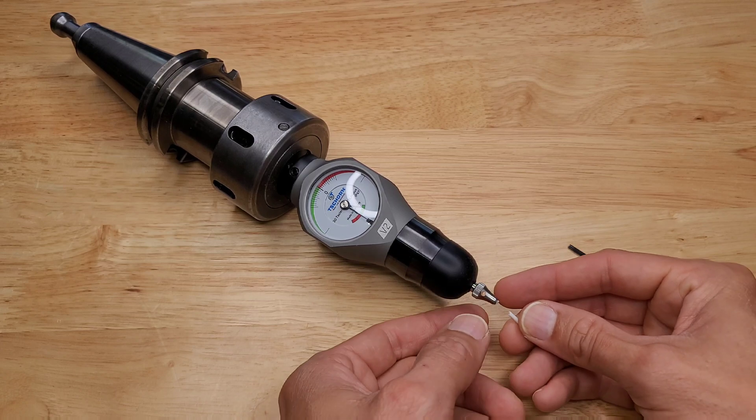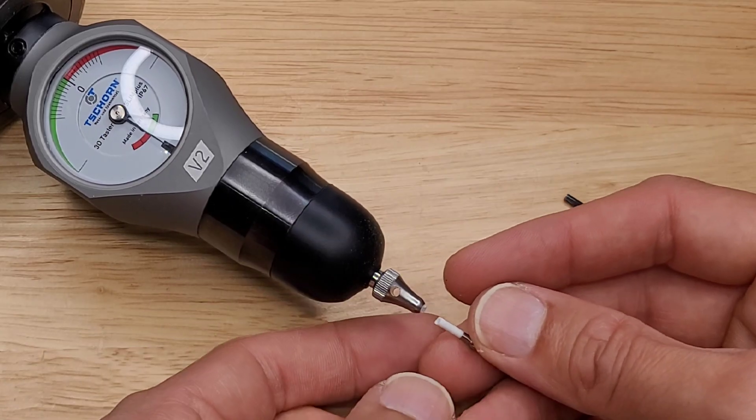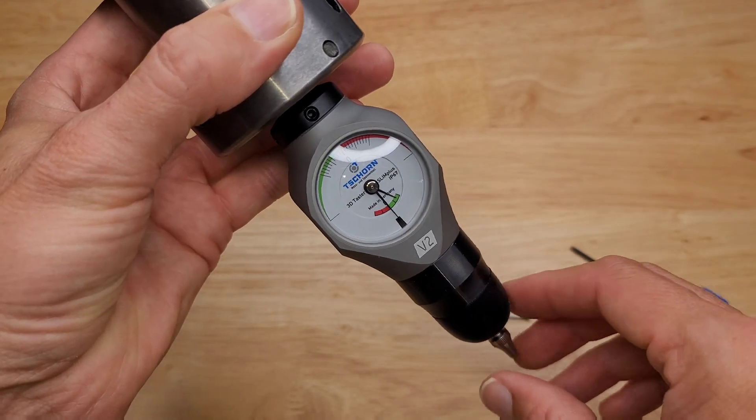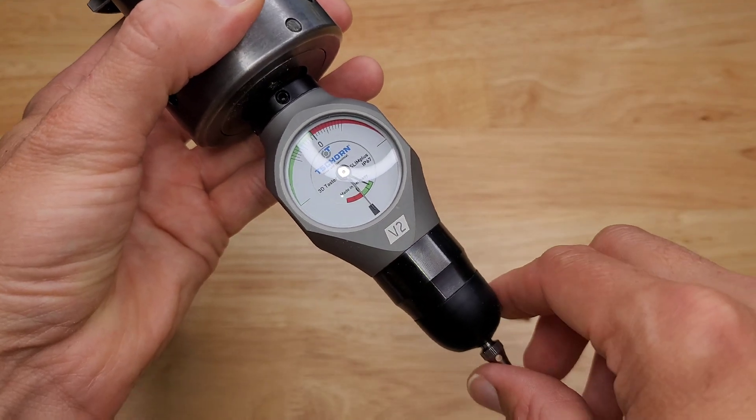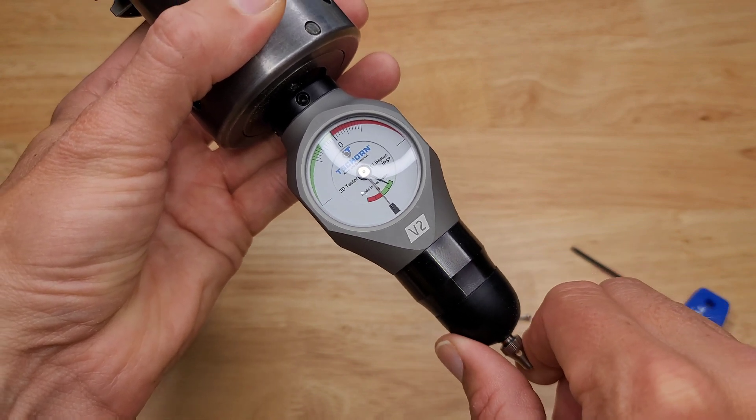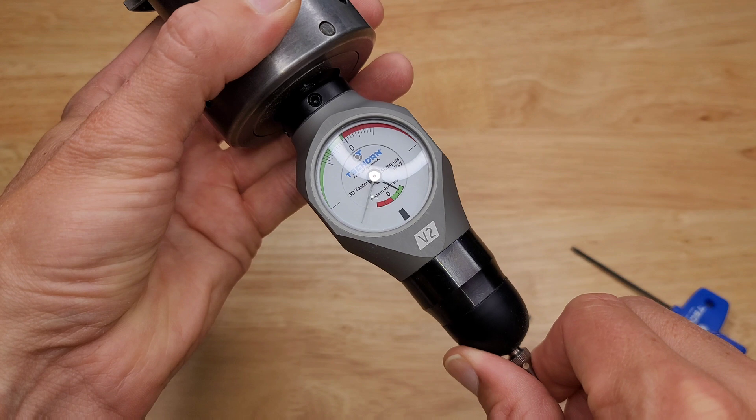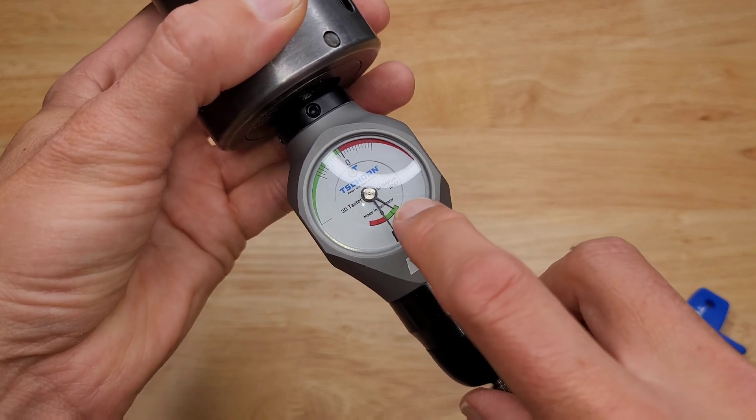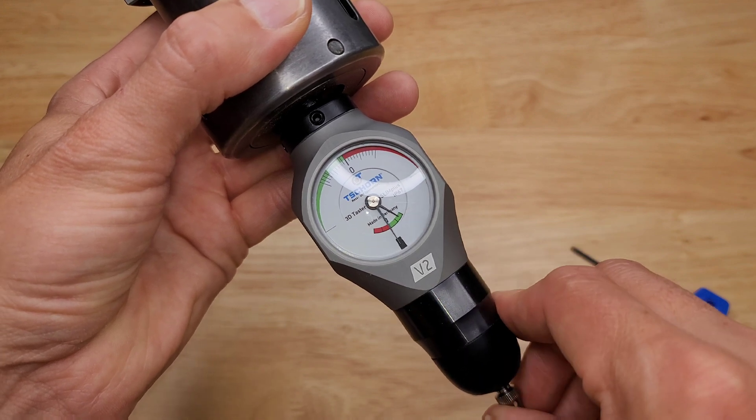So somebody, I'm not going to say who, broke the tip off of the Shorn 3D Taster. To replace the tip, the first thing you have to check is just to make sure that your Shorn 3D Taster still works properly. So that the needle still comes back to zero within that black area, and the green is still in like the negative 1.5 area.